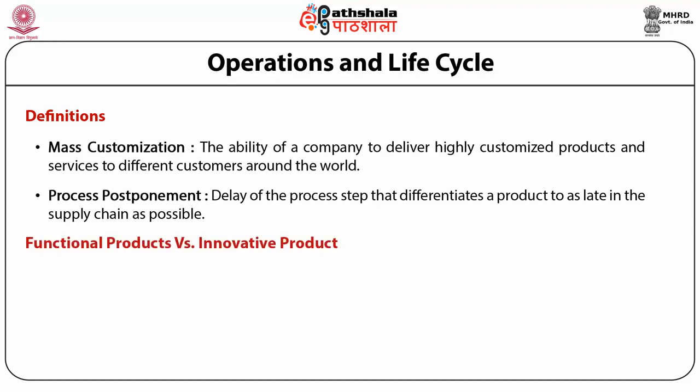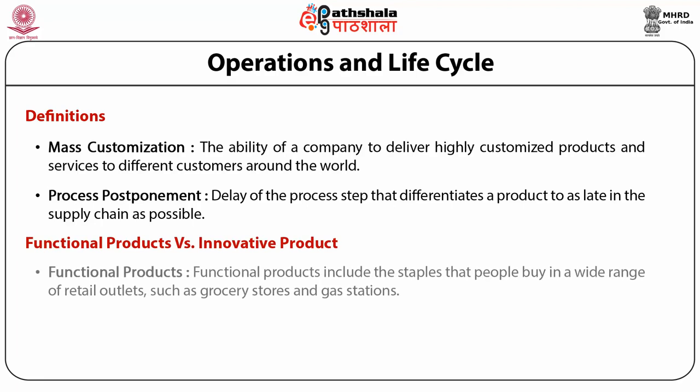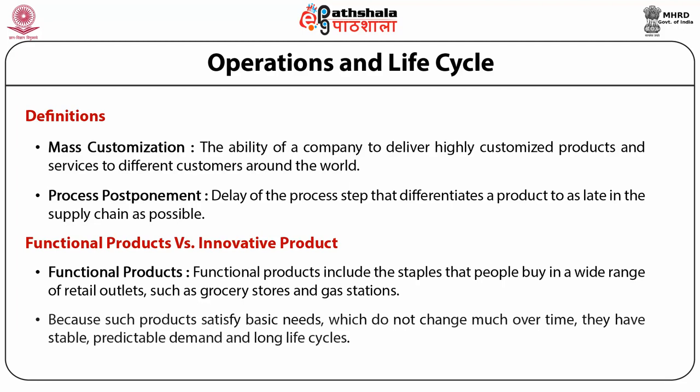Now let us differentiate between functional products and innovative products. Functional products are staples that people buy in a wide range of retail outlets such as grocery stores and gas stations. The staple is an example of a functional product because such products satisfy basic needs and do not change much over time — in terms of functionality, appearance, and design, staples have remained the same for decades. Functional products have stable, predictable demand and long life cycles, but their stability invites competition which often leads to low profit margins.